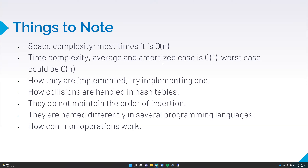Some things to note about hash map, hash table, and hash sets. Hash table is like the parent putting everything together. Space complexity: most times when you use a hash table, you're storing every element in either the array or the list, so the space complexity is O(N). That's very important. Whenever you see an interview question that says 'don't use extra space,' forget about your hash table, because hash tables require O(N) space — you can't use it in those cases.